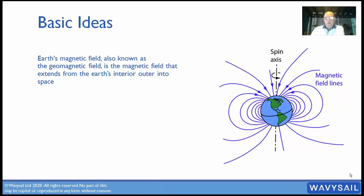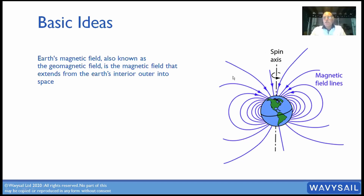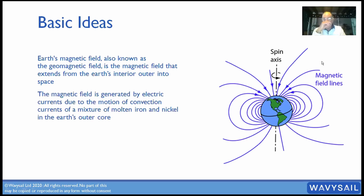We use the earth's magnetic field, also known as the geomagnetic field. It's the field that extends from the earth's interior out into space — basically the big magnetic field that keeps us protected from the sun and harmful rays. It also works as a magnetic compass for us. As the earth spins, this magnetic field turns.